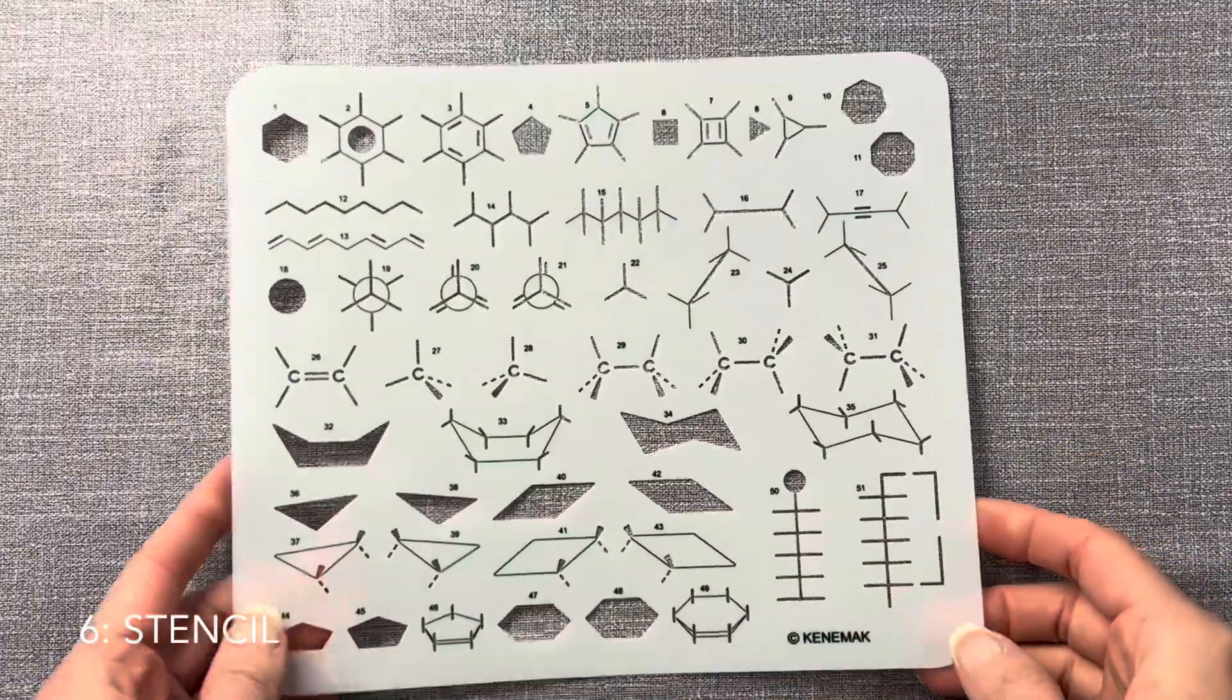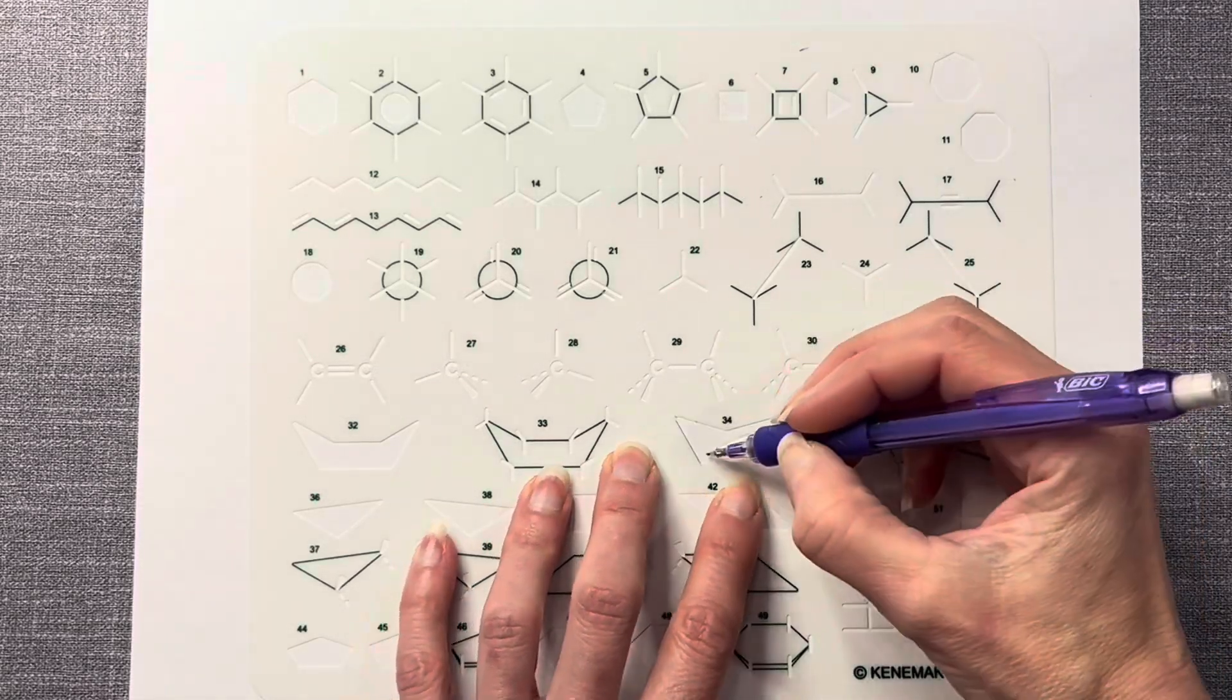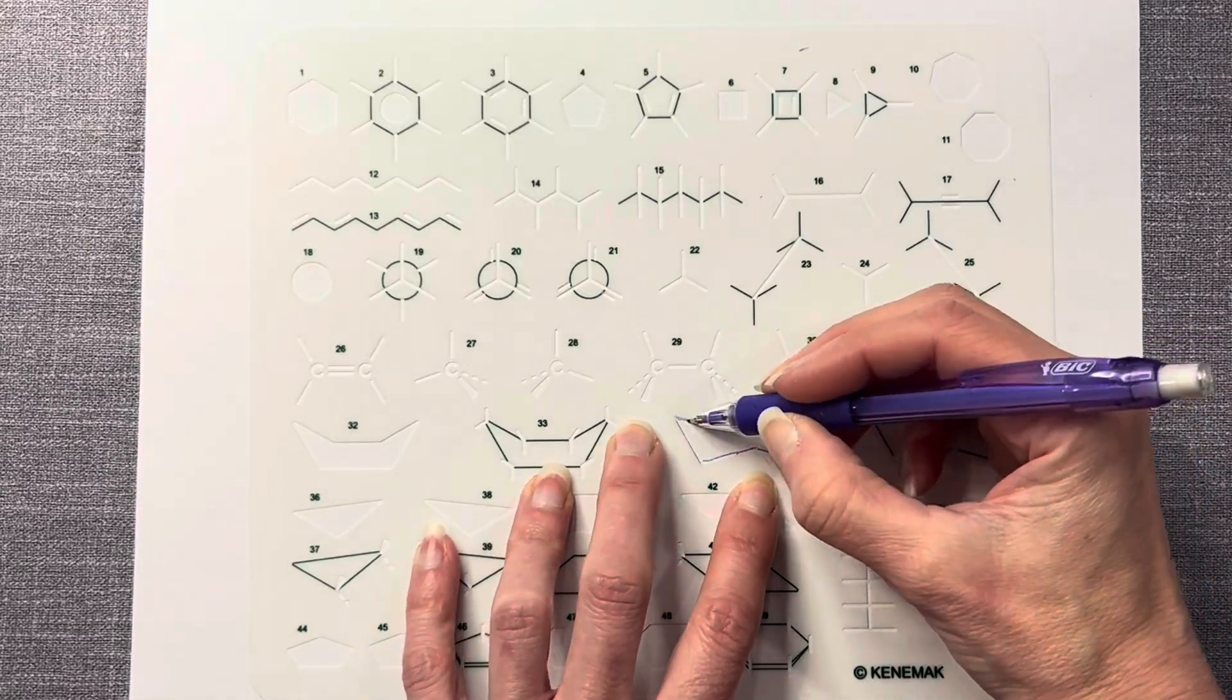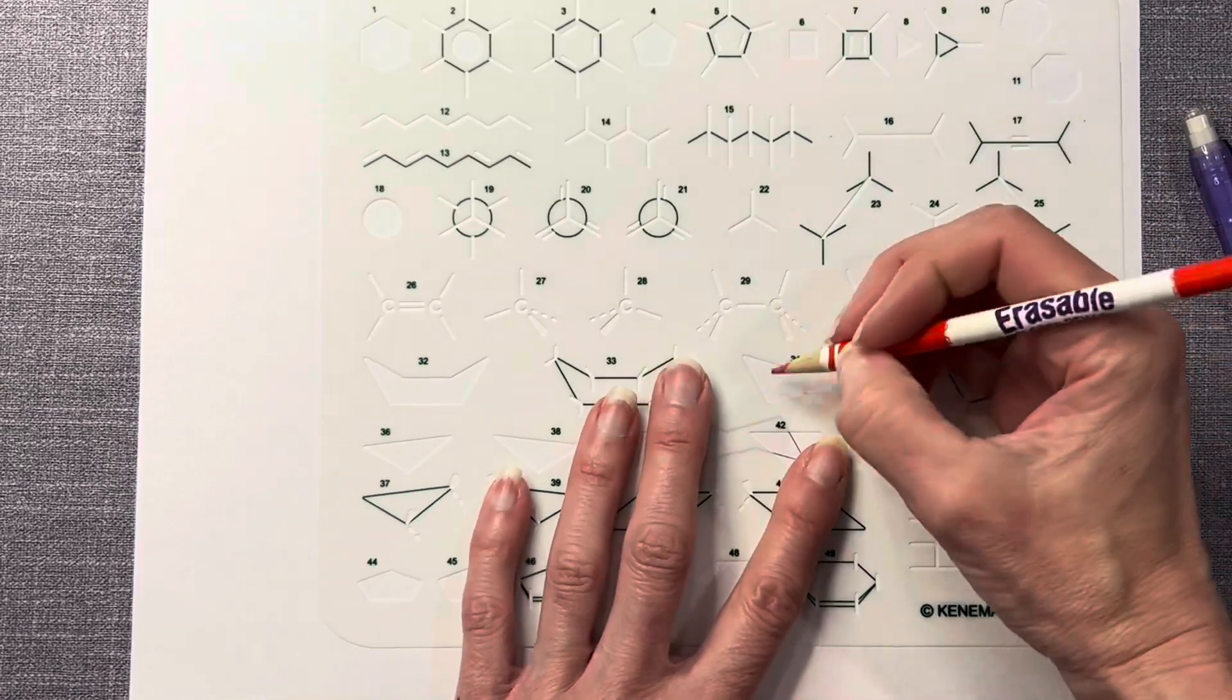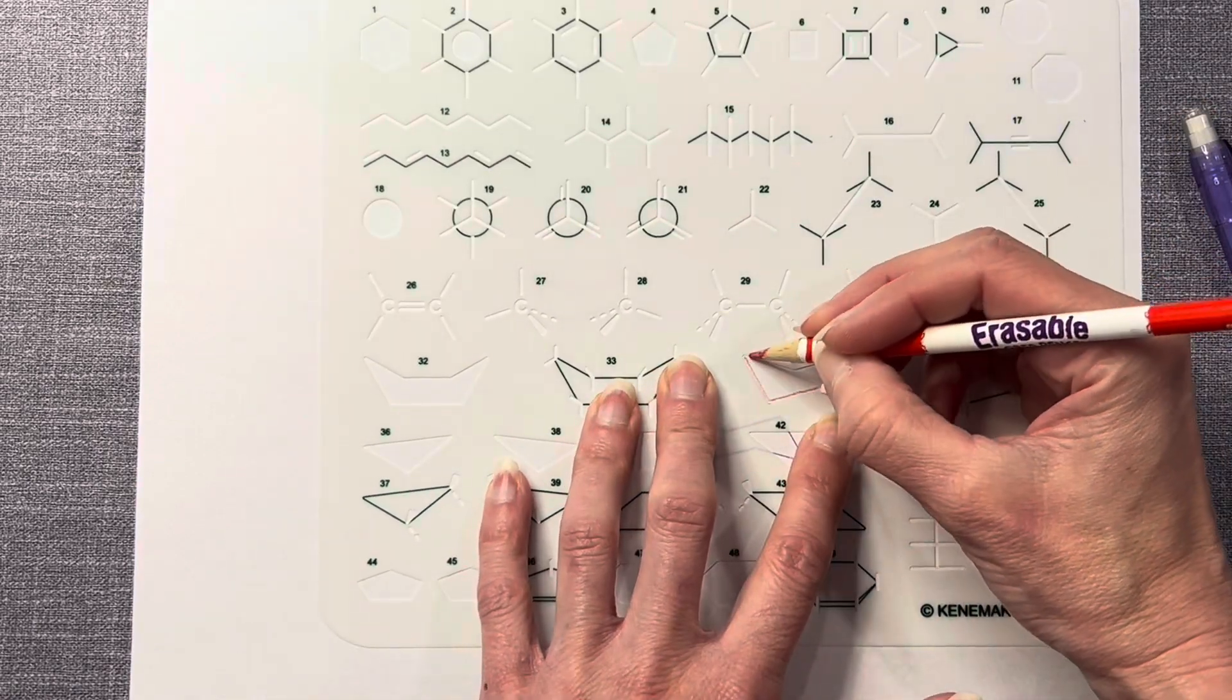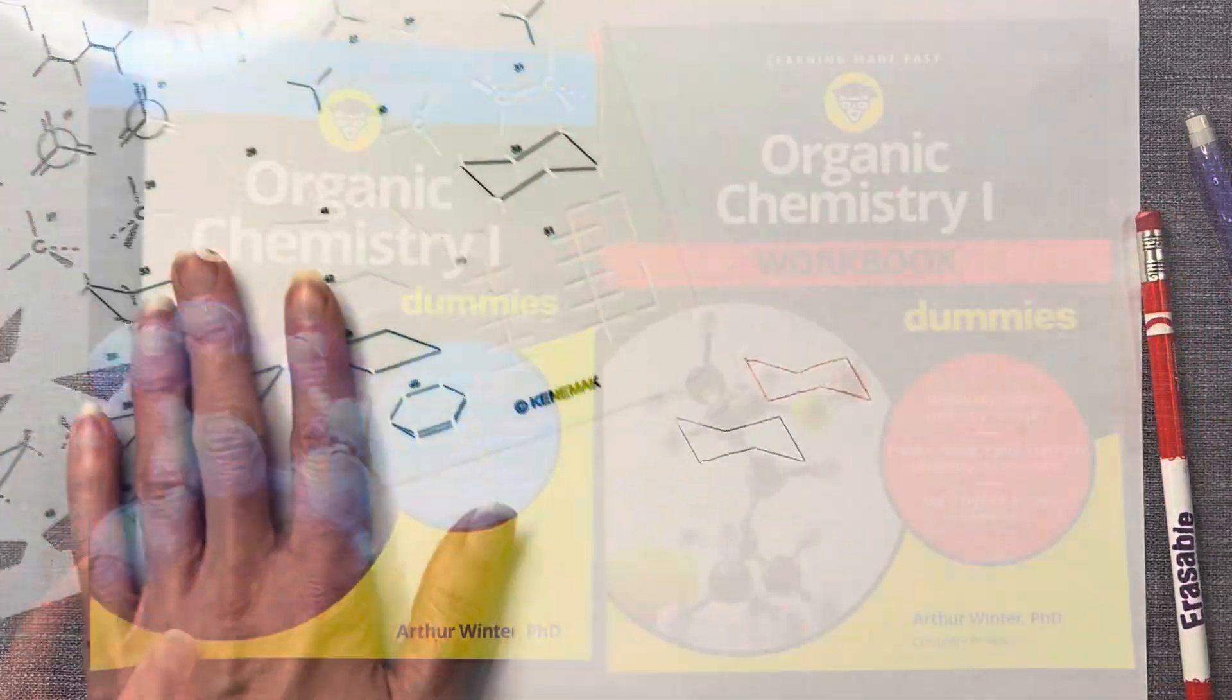Number six, stencils. If you like your notes to be neat, a stencil is the way to go. This one here is my personal favorite. I think it has the most useful assortment of shapes out of all the ones I've seen on Amazon. This isn't a requirement. Your instructor will be able to deal with your horrible drawings. Don't feel like you need to buy this. This is just an extra thing.